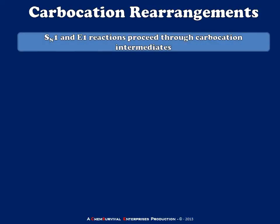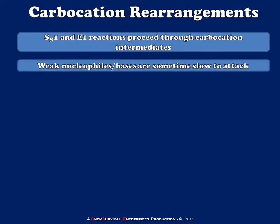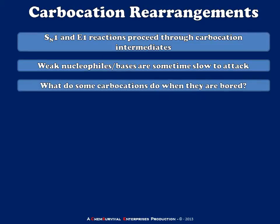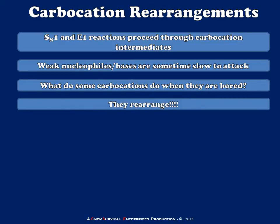We're going to start by thinking about first-order reactions — those nucleophilic substitutions and eliminations that you've no doubt heard about in class. Both of these reactions proceed through a carbocation intermediate, which is metastable, meaning the carbocation intermediate will exist for a certain period of time. When weak nucleophiles and bases are in play, they're sometimes a little slow to either go through a nucleophilic attack or to abstract a proton and act as a base.